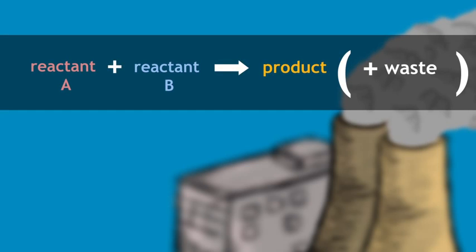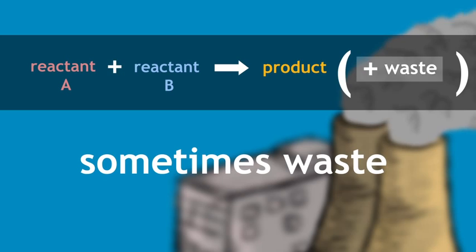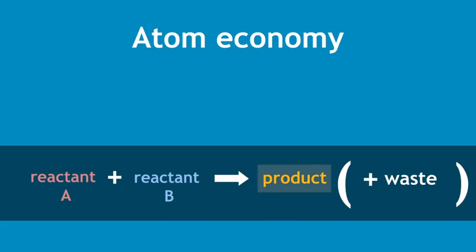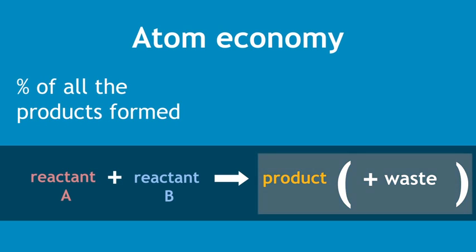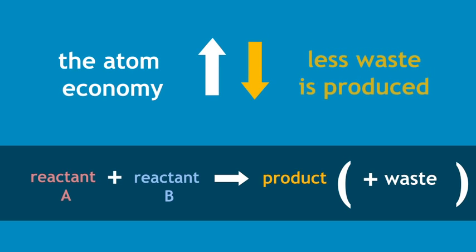When a reaction is carried out in industry, we are normally only interested in one of the products. The other products are sometimes waste. Atom economy simply shows us the amount of product that was useful as a percentage of all the products that were formed. The higher the atom economy, the less waste is produced.